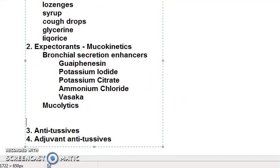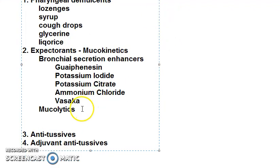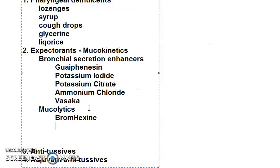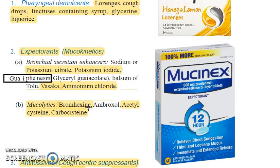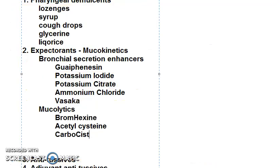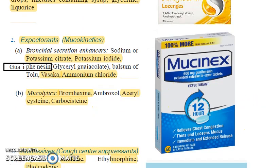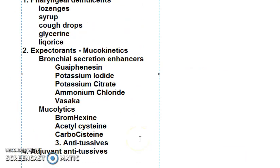Coming to mucolytics — bromhexine is important. Then you have acetylcysteine and carbocysteine. Note that the spellings are different and you need to remember and write them correctly — do not depend on others.